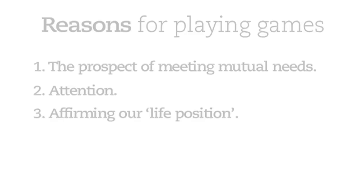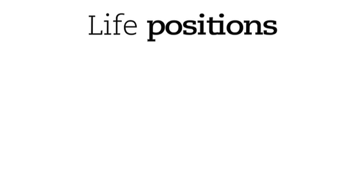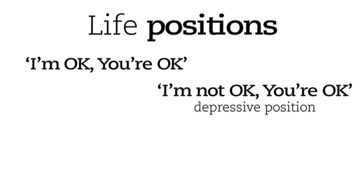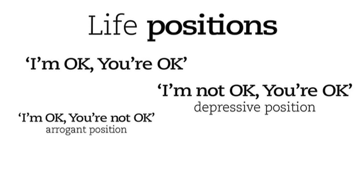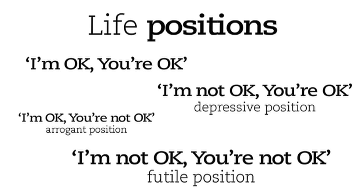A third idea is that games affirm what TA calls our life position. TA suggests that through the influence of our environment and upbringing, we can find ourselves taking a broad stance in our relationships with other people. We can take a position of equality — 'I'm okay, you're okay' — or a depressive position putting ourselves below others, an arrogant position putting others below us, or a futile position putting everyone down. TA suggests we like to justify these positions to ourselves, even where they distort reality, and we choose the games that confirm our own basic position.